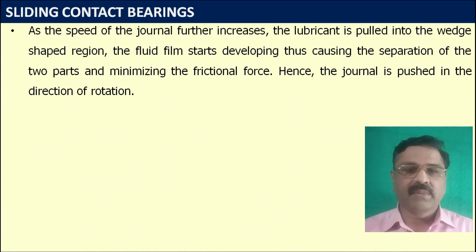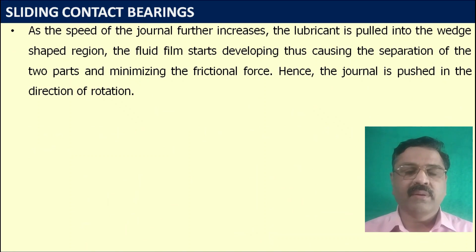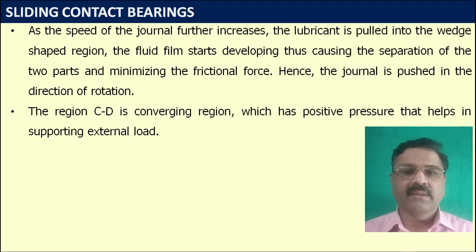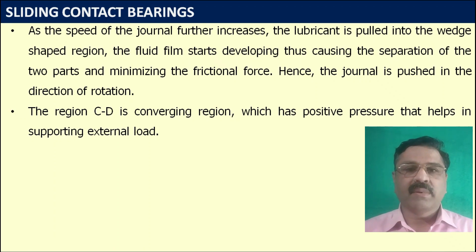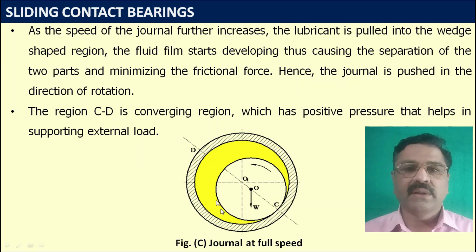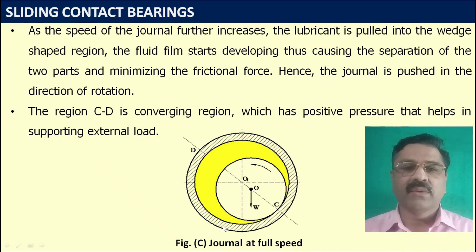As the shaft speed further increases, the oil is pulled into the wedge-shaped region and the fluid film starts developing, causing separation of the two relative parts in motion. As the fluid film develops, the frictional force gets minimized and the shaft is pushed in the direction of rotation. The region CD is the converging region which supports the external load due to the positive pressure force developed.